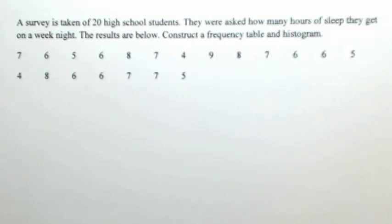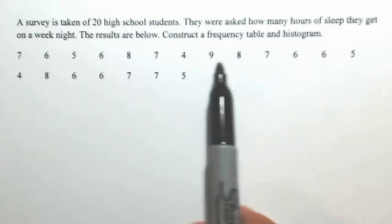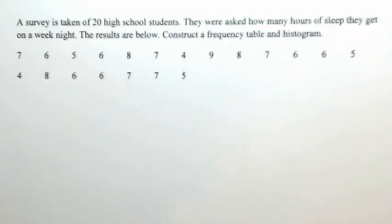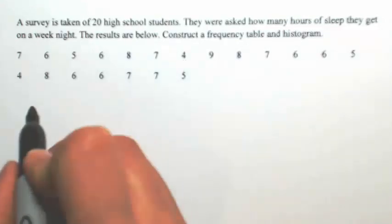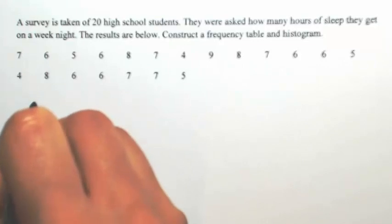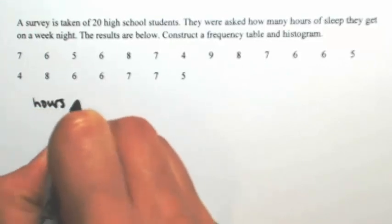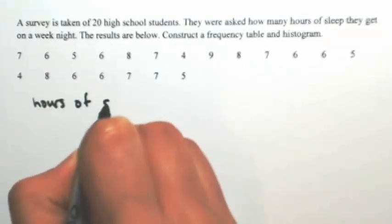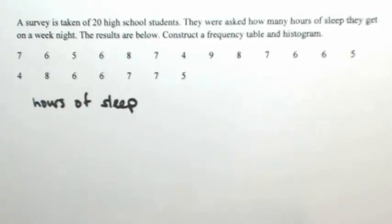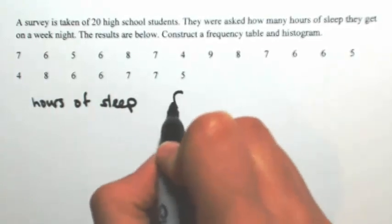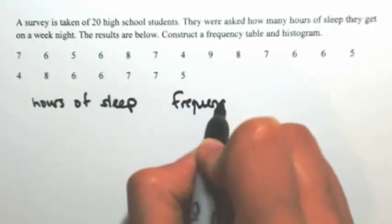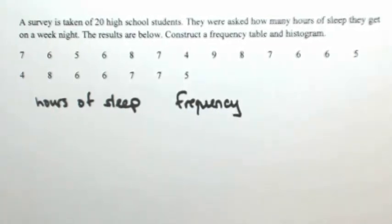When asked to construct a frequency table, what we're going to do is list out all of our data and simply mark out how many times each value appeared. So looking through the data, let's start with the smallest number. I'm going to set up my table — one side is for the number of hours of sleep, and then after that we say what the frequency is, in other words, how many times it appeared.